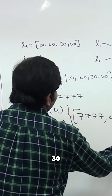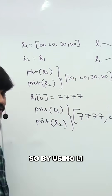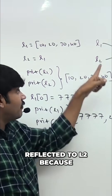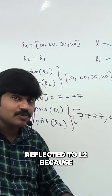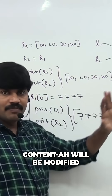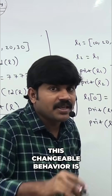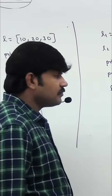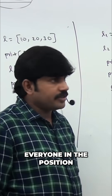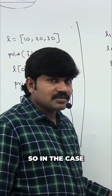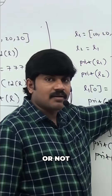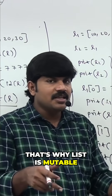In both cases, the first element is replaced with 77, then 20, 30, 40. So by using l1 if you perform any change, that change will be reflected to l2, because both are pointing to the same object. The content is modified in the existing object only — this is changeable behavior, i.e., mutable. That's why list is mutable.